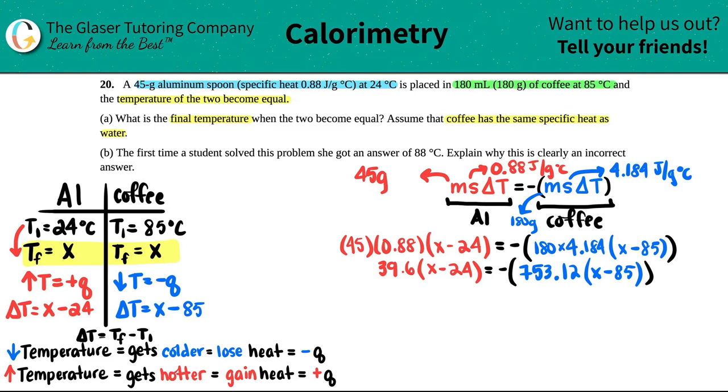Now this is distributing. I have two things in my parentheses with a number outside of it that's multiplying. You've got to be fair—multiply the X with that number and the 24. Same thing with this. So this would be 39.6X minus 39.6 times 24, which is 950.4.